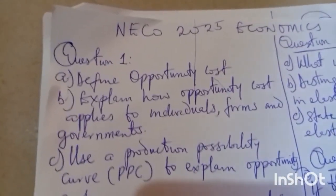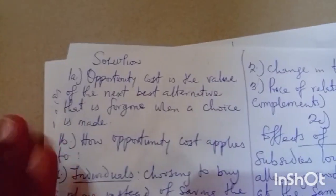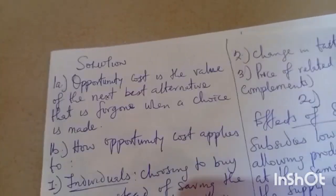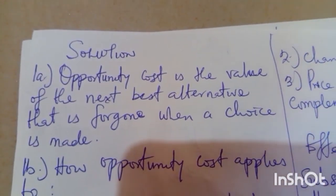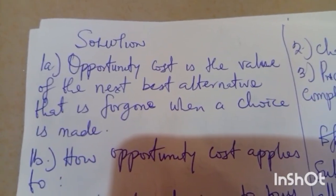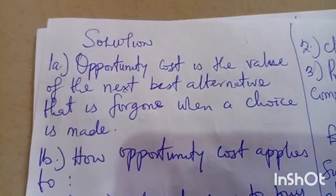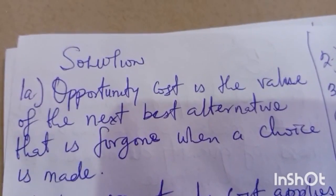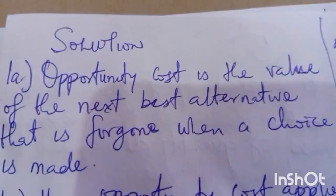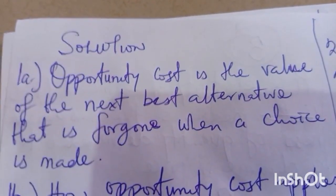If I use that 1000 naira to buy food, my opportunity cost is the book — the book I am not buying is the opportunity cost. My formal answer for question one is: opportunity cost is the value of the next best alternative that is forgone when a choice is made. I chose food and let go of the book — that book is my opportunity cost. You can use your own English to modernize this definition.